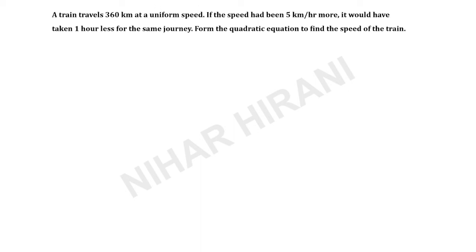Hello, let us solve this question. A train travels 360 km at a uniform speed. If the speed had been 5 km/hr more, it would have taken 1 hour less for the same journey. Form the quadratic equation to find the speed of the train.